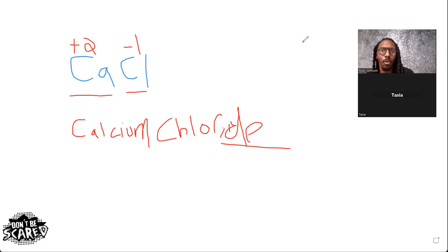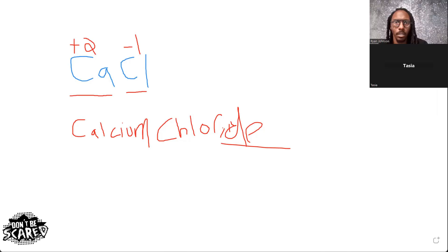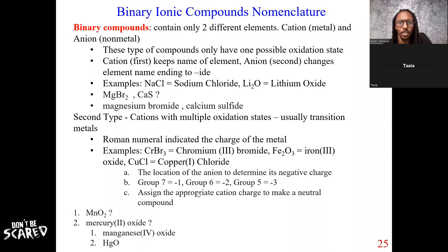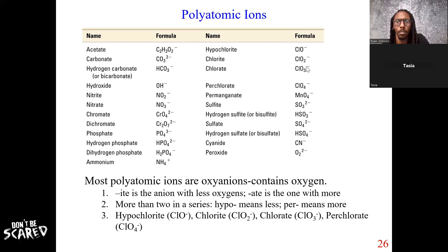Now let me cover molecular compounds, because those are the other main type. Let me also briefly summarize — group 5A is always minus three, group 6A always minus two, group 7A always minus one. I'm not going to go over polyatomic ions in detail right now, but essentially these are anions with multiple atoms. I'd suggest knowing hypochlorite, chlorite, chlorate, perchlorate, nitrite, nitrate, hydroxide, phosphate, sulfate, and sulfite.